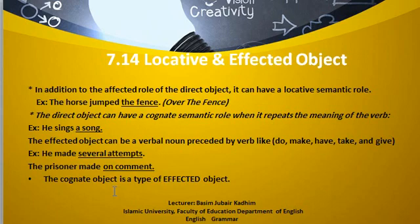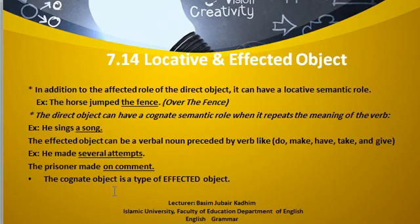The direct object can have a cognate semantic role when it repeats or echoes the meaning of the verb. For example, 'he sings a song' or 'he slept a sleep' — in Arabic, نام نوماً أو غنى أغنيةً — what we call in Arabic المفعول المطلق. So the cognate object can be a verbal noun preceded by a verb like do, make, have, take, and give.